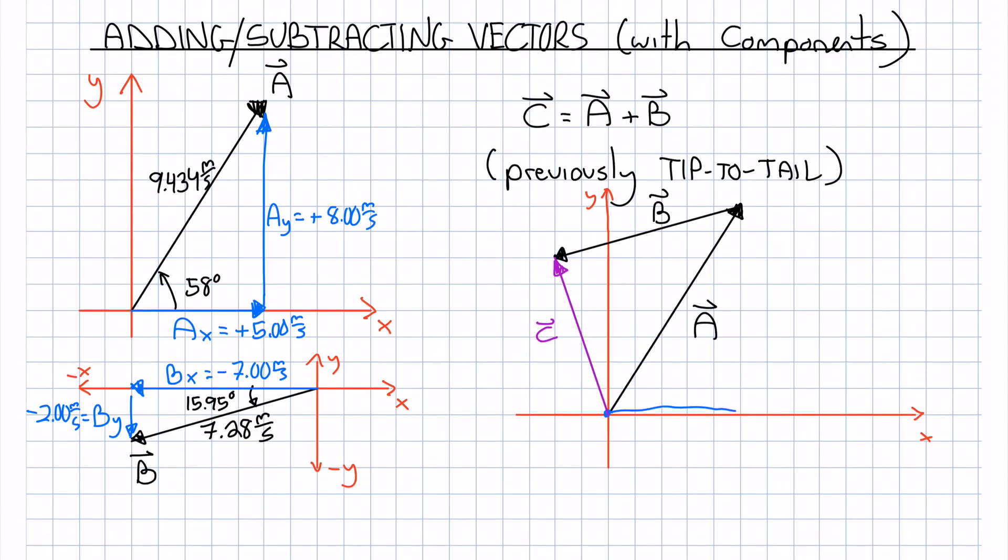Now to give you an idea of how to add vectors with components, just notice that on my scaled diagram here, Ax being plus 5, Bx being negative 7, if we add those together directly, we get Cx is negative 2, just like it is on the diagram.